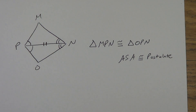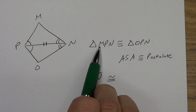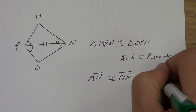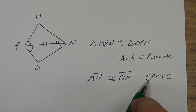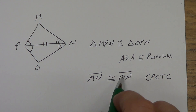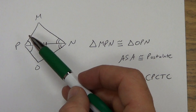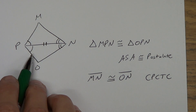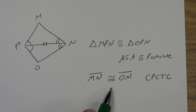Now we can say something new using CPCTC. We could say MN is congruent to ON — first and last letters, first and last. And our reason for that would be CPCTC. Corresponding parts — they're in the same position, first and third. Of congruent triangles — yes, we proved the triangles congruent. So corresponding parts of congruent triangles are congruent. We could also say angle M is congruent to angle O because of CPCTC, and MP is congruent to OP because of CPCTC. Basically, any piece you did not already know is congruent — once you've proven your triangles are congruent — you can say those pieces are also congruent with CPCTC.